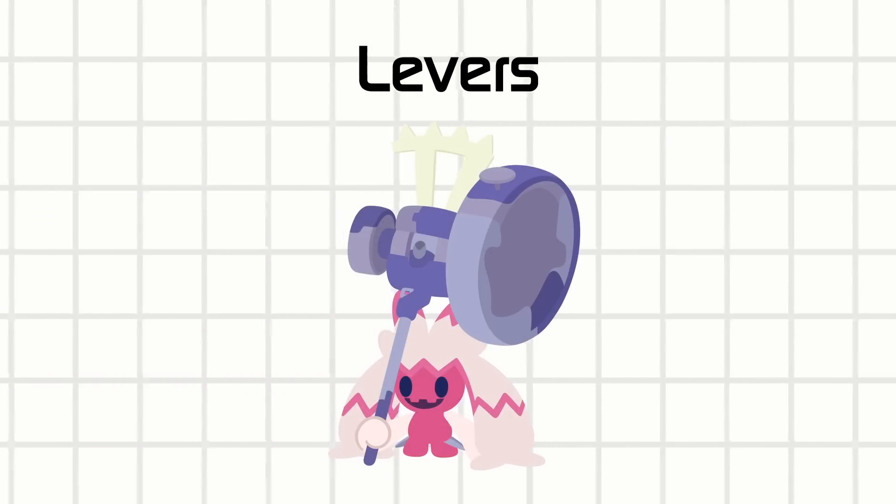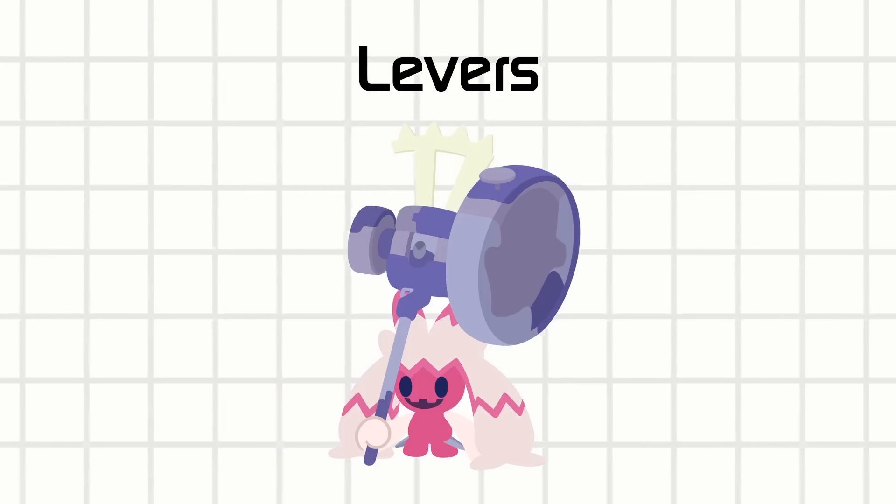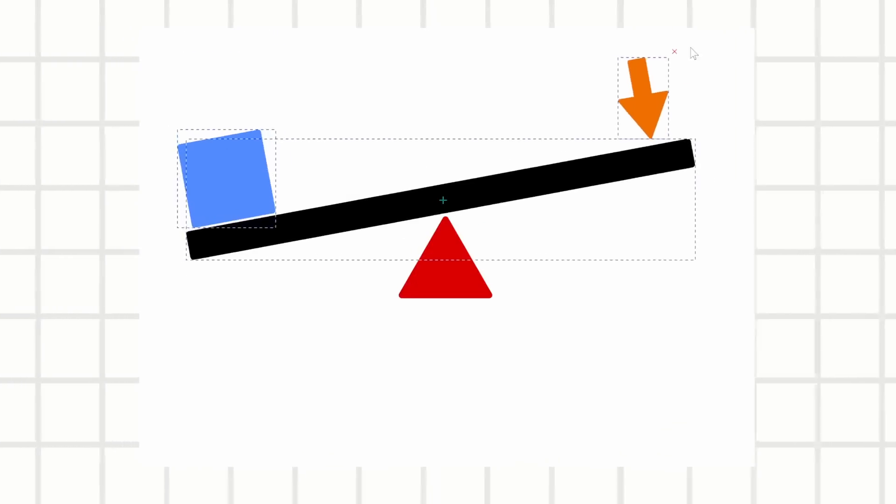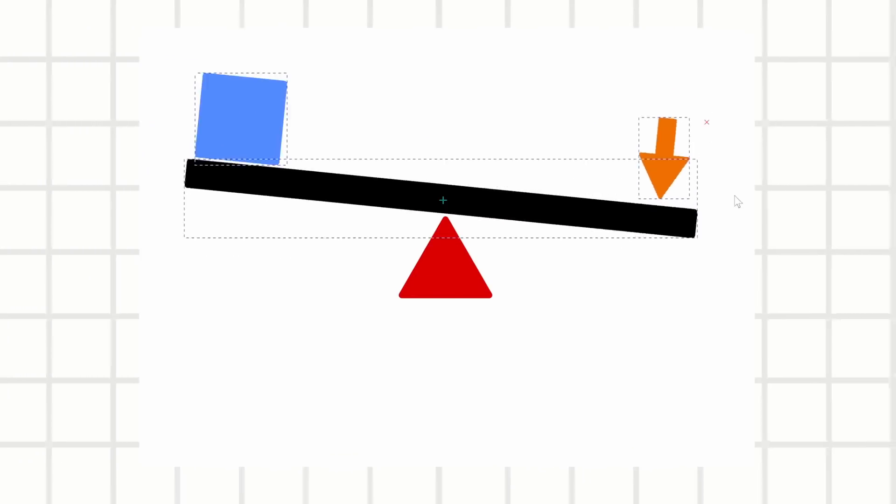Let's start with the lever, which is a bar that pivots on a certain fulcrum. There are three elements to every lever: Effort, load, and fulcrum. Fulcrum being the pivot point. Now you can scramble the order of these three elements on the bar, leading to three different classes.